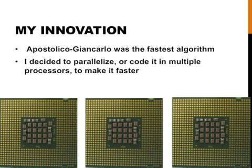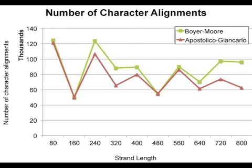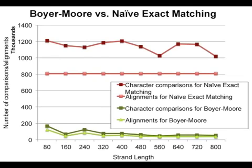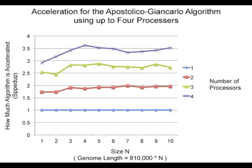I innovated a parallel Apostolico-Giancarlo algorithm by coding it to run on multiple processors. A parallel program divides the task of searching a genome. Parallel computing uses multiple processors by making them work together on a problem, reducing the runtime. Apostolico-Giancarlo is the most efficient algorithm with the fewest alignments. Parallelizing it accelerated the algorithm by 400%.